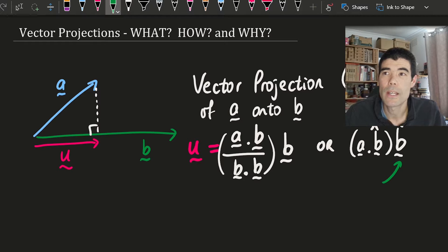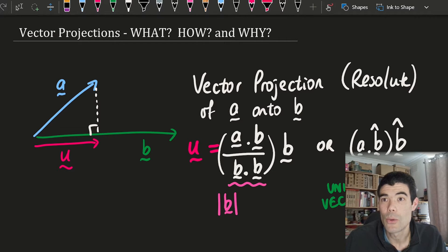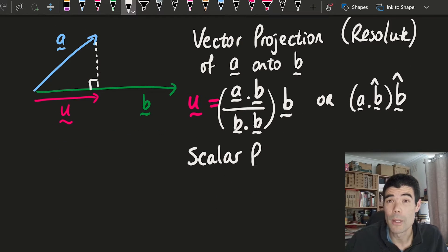A unit vector, remember, is the vector with length one. So we just take the original vector, divide it by its length, and that gives us the unit vector. Now, why those two are equivalent: b dot b is actually the length of b squared, and the unit vector is b over the length of b. So what we have in the left formula, we have the length of b twice there. So we can take each of those b's on the numerator and divide them by their lengths to get unit vectors.